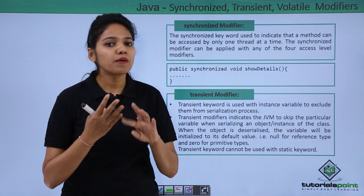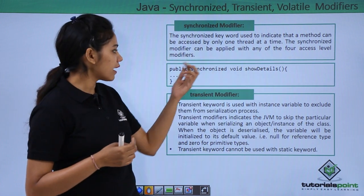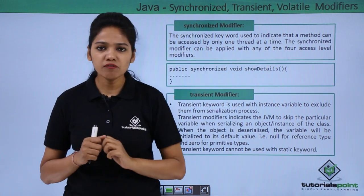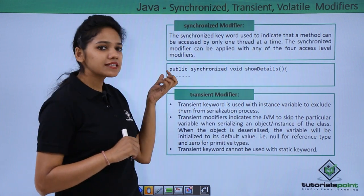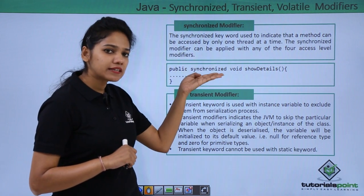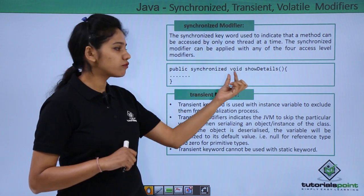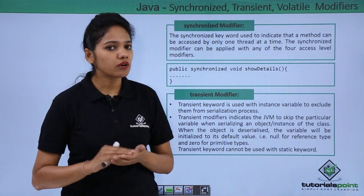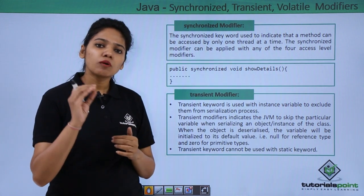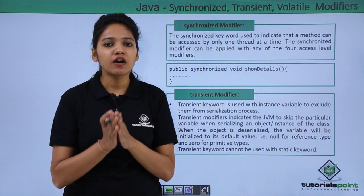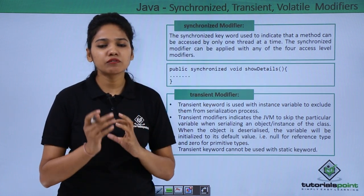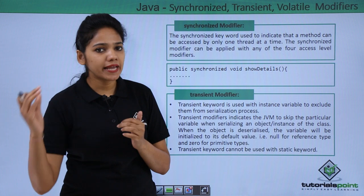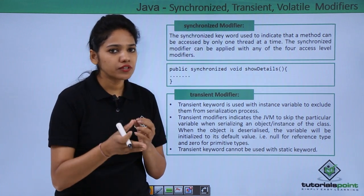Access modifiers are nothing but public, private, protected, and no modifier. So the synchronized keyword can be provided with all four access levels. The syntax is: access modifier, then the synchronized keyword, then void, the method name, normal brackets, and in the braces you write the block of statements to execute. A normal method and a synchronized method don't differ in declaration — only that this method cannot be called by any other thread until the first thread frees it up.